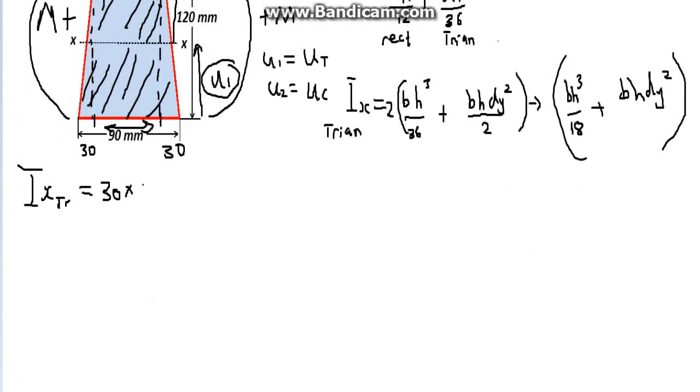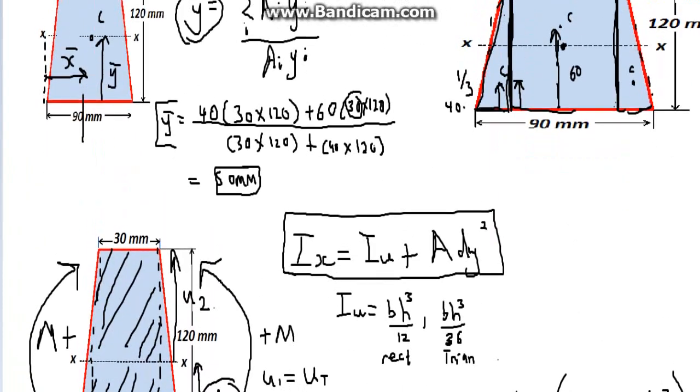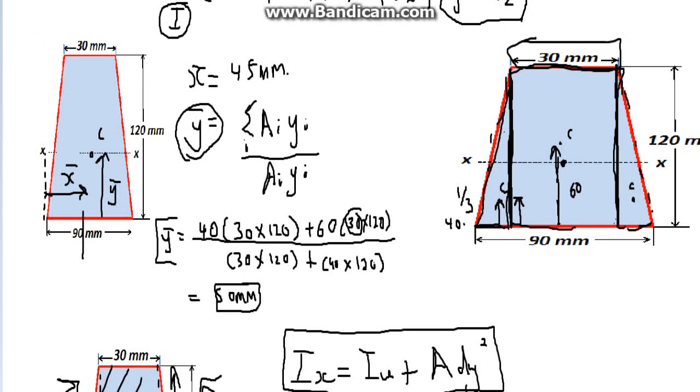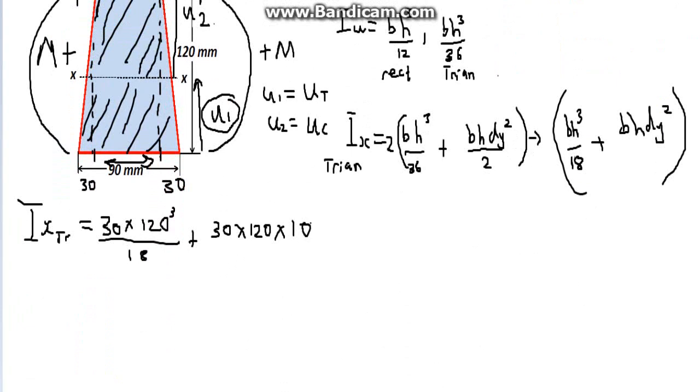Let's get back to the question. So it's 30 times height of 120 cubed, divided by 18, plus 30 times 120 area, multiplied by dy. Now, what is dy? The differential of distance from the centroid of the distinct object that you picked out, to the actual neutral axis. It's just simply this distance here. Centroid to centroid. That's dy. 40 take 50, 10. 10 squared, 100.